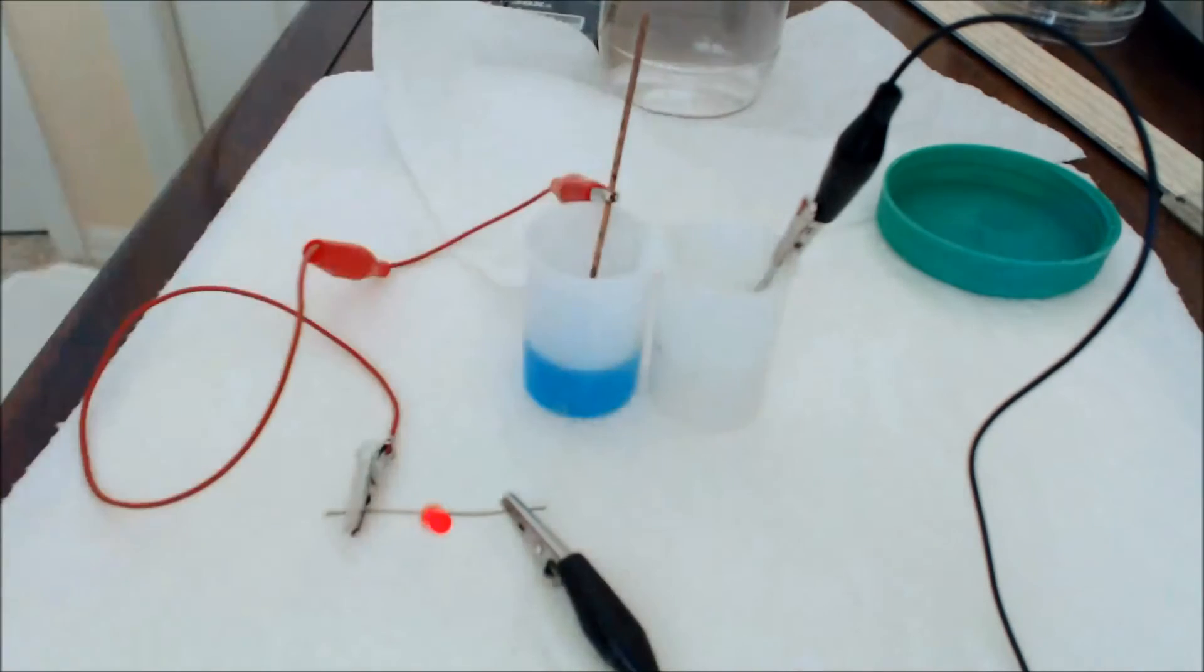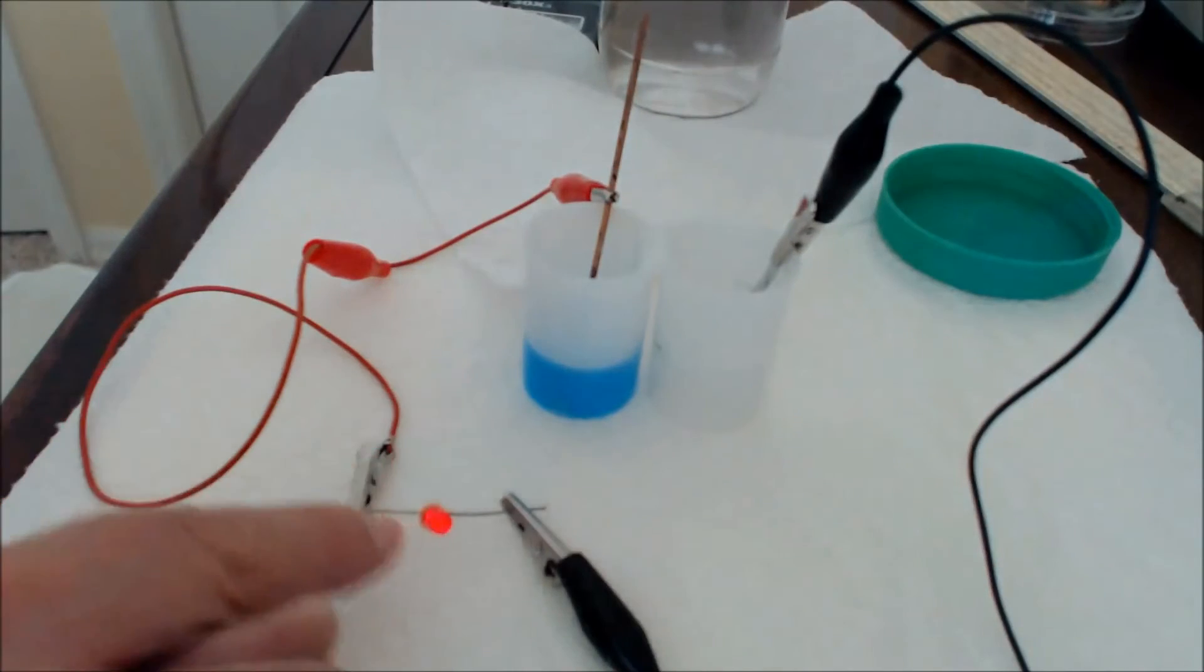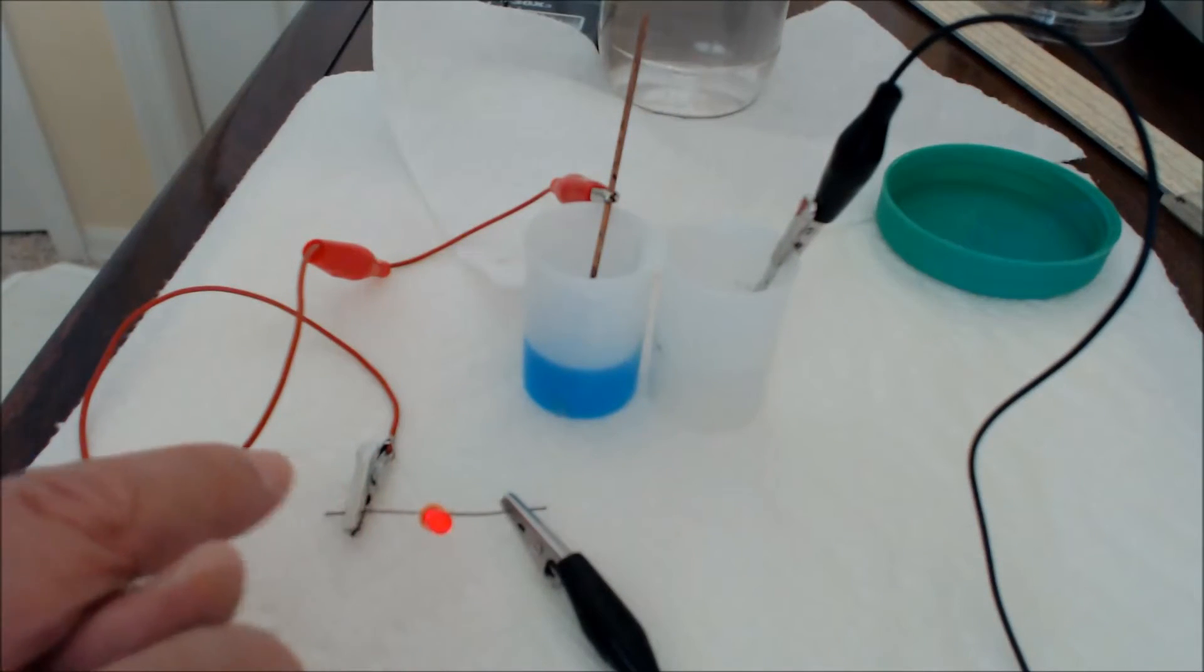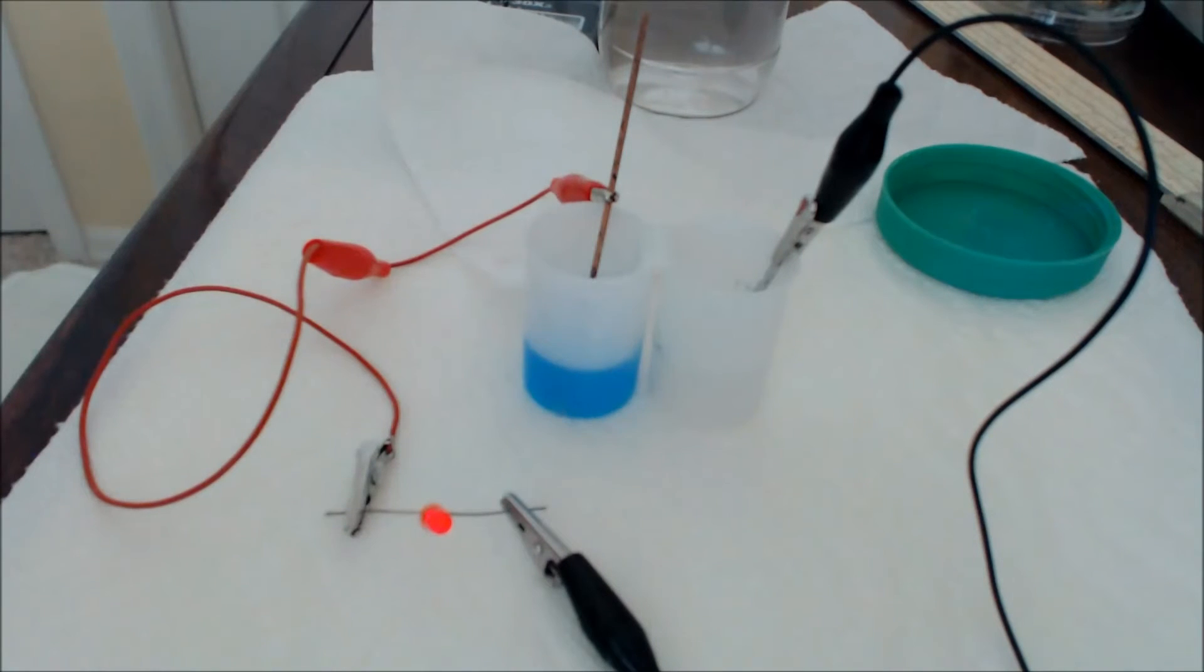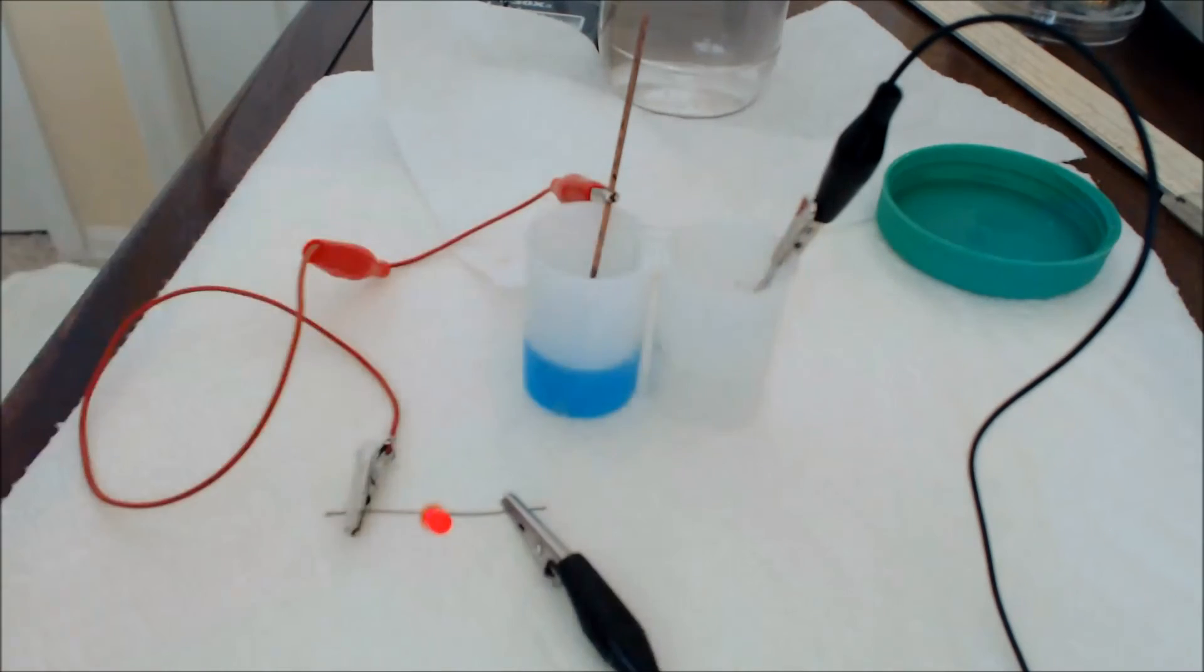A magnesium atom on the surface of the metal loses two electrons. The magnesium becomes an ion, a plus two ion. It goes into solution. The electrons go through the wire, through the LED device, and into the copper cell, where the two electrons will cause a copper ion to be reduced to copper metal. And the salt bridge completes the circuit.